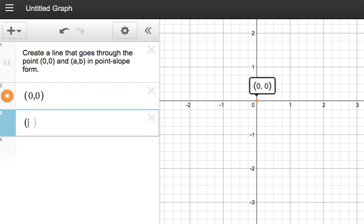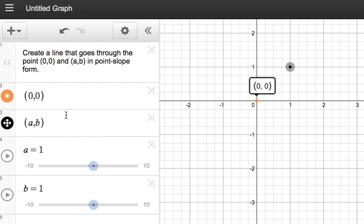I'm going to create another coordinate, and I'm going to call this A, B. Right now, Desmos does not recognize this as a value until I create it as a slider. I'm going to click on All, and I'm going to create sliders.